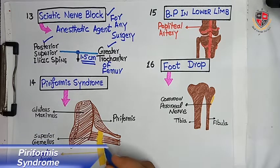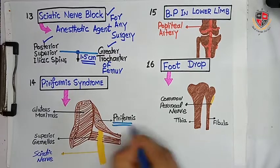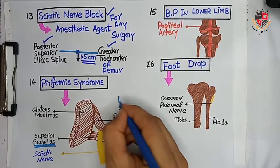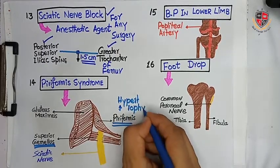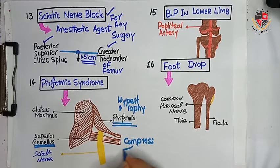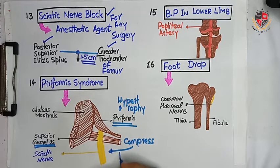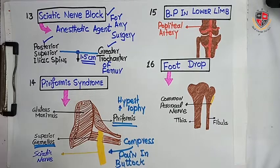The next clinical is Piriformis Syndrome. Piriformis muscle is a muscle of the gluteal region. The sciatic nerve passes downward through the piriformis muscle and superior gemellus muscle. Hypertrophy of the piriformis muscle compresses the sciatic nerve, causing pain in the buttock.